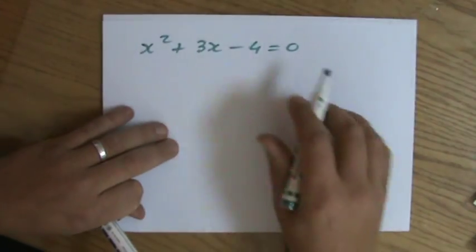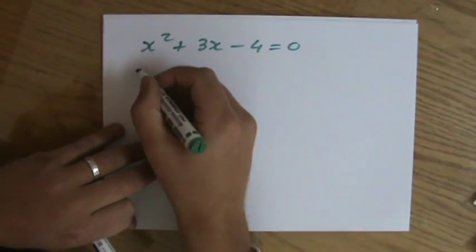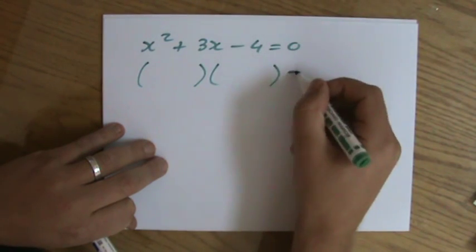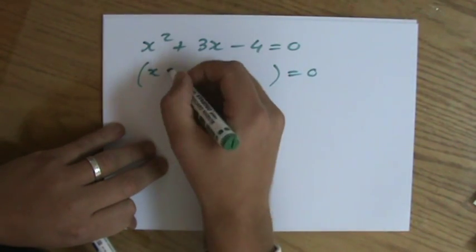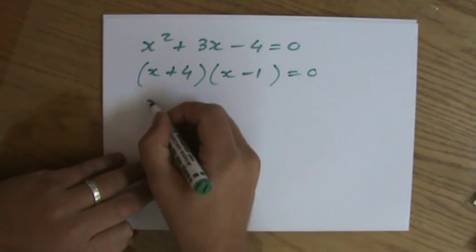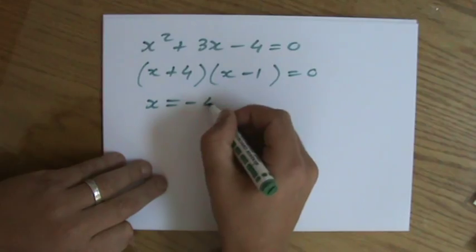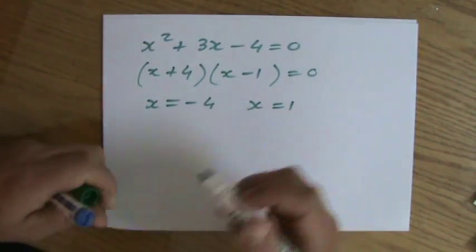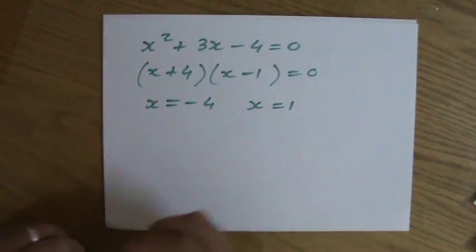Because x squared plus 3x minus 4 equals 0. So two numbers multiply minus 4, and if you add them you get 3. I showed you before how to factorize. That is 4 and minus 1. Zero product property, so x is minus 4, or x is 1. I've explained this in the past.